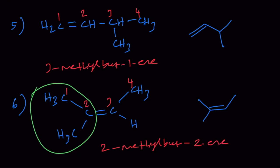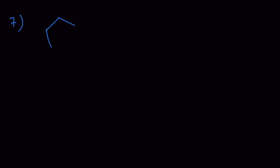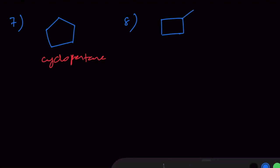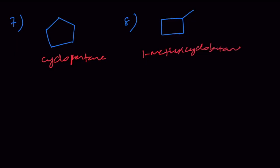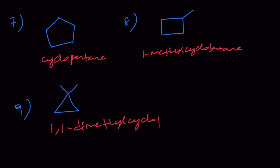We are now exhausted with the acyclic isomers, so let us move to the cyclic isomers. For cyclic isomers, I will draw structures directly in bond line notation. Isomer 7 is cyclopentane. Isomer 8 is methylcyclobutane, or 1-methylcyclobutane. Isomer 9 is 1,1-dimethylcyclopropane. We can also draw ethylcyclopropane as isomer 10.